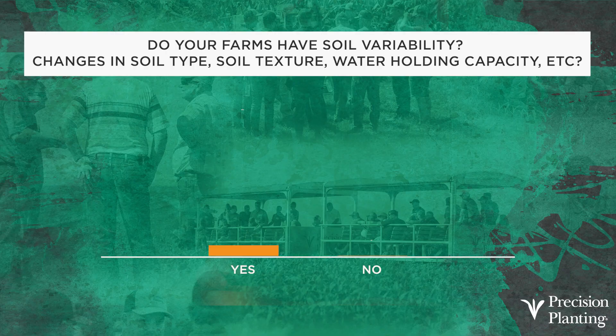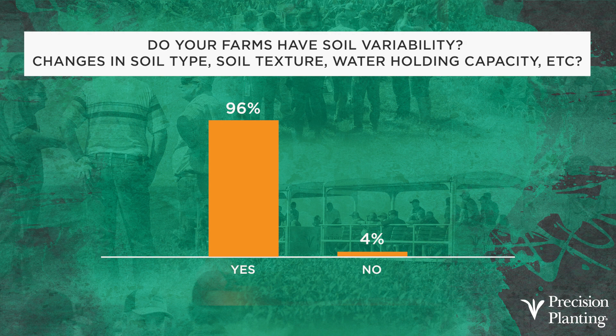To understand this, we have to think about soil variability. How much do you have, or do you have soil variability on your farm? As we travel on the PTI Farm winter tour in January, February, and March, we ask growers: do you have soil variability? Do you have changes in soil type, soil texture, or water holding capacity? And of all the growers we talked to — nearly 2,000 farmers in this particular survey — 96% of farmers said they did have soil variability.